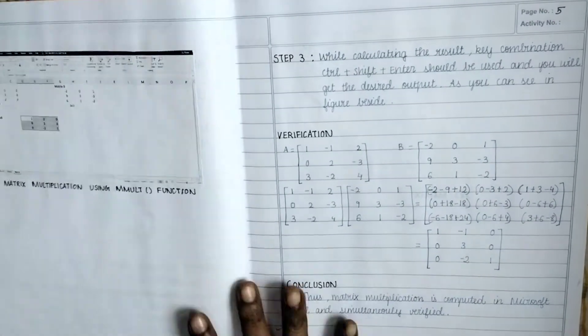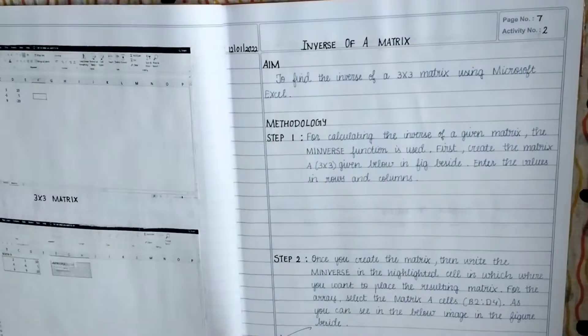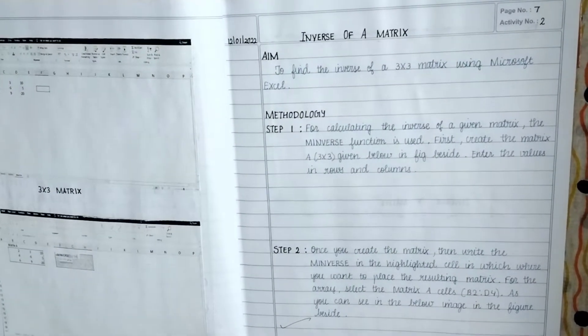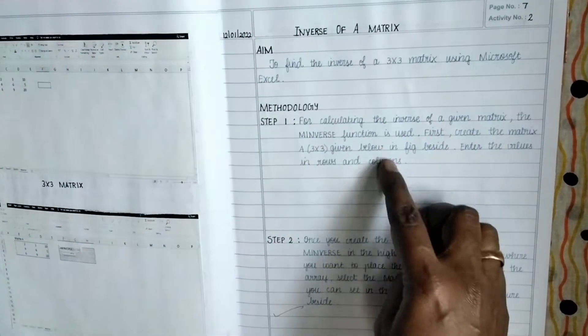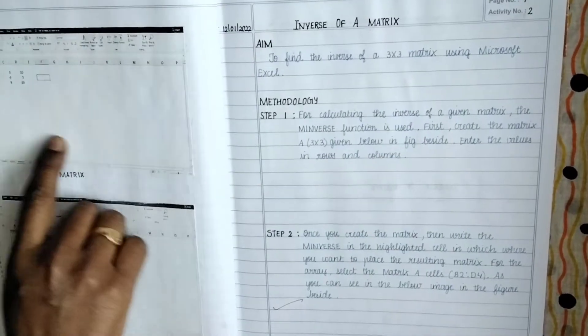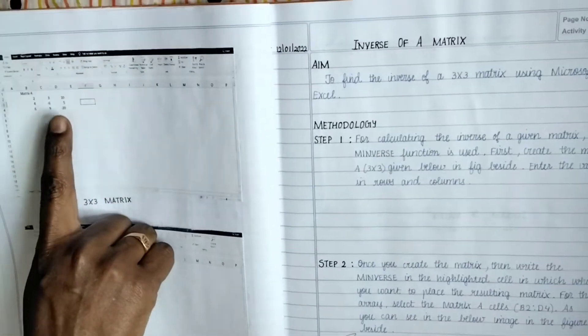Okay, so this is my first activity. Second activity is how do you find inverse of a matrix. Same thing, what is the aim, what is the methodology. First one is entry of the 3x3 matrix in the Excel sheet.